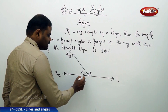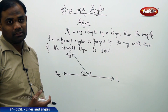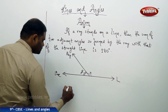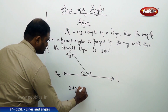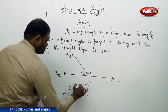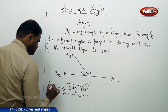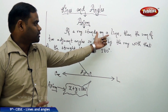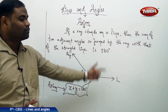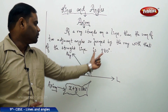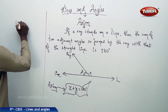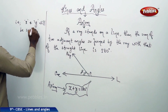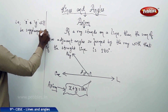These two adjacent angles always form a sum of 180 degrees. Obviously, because the ray makes 180 degrees with the straight line. The property says x plus y equals 180 degrees. This is how the axiom states: if a ray stands on a straight line, then the sum of the adjacent angles so formed by the ray with that of the straight line will always be 180 degrees.